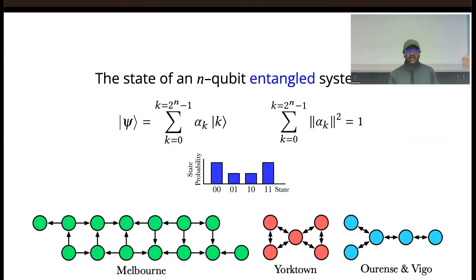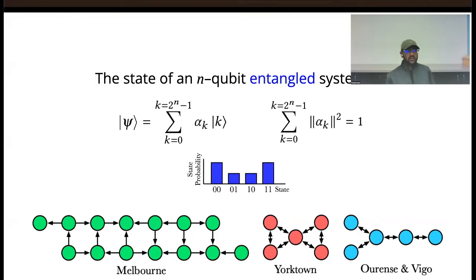This notation can be extended to an n-qubit entangled system. The state psi can be represented as a superposition of all 2^n states, where each state has a complex coefficient representing its amplitude, and the sum of the norms of all those complex coefficients is 1. So the output is actually a probability distribution — for example, a two-qubit output has four different states: 00, 01, 10, and 11, each with a probability of being measured.